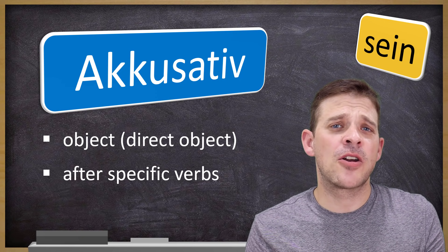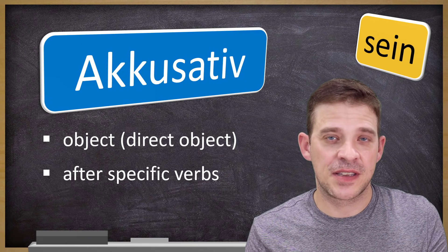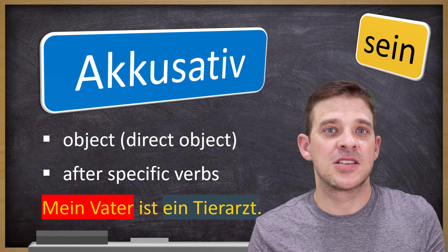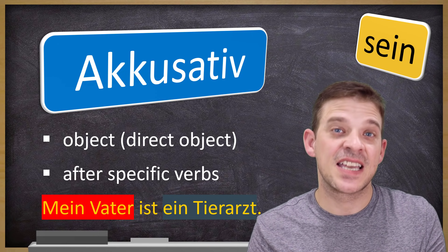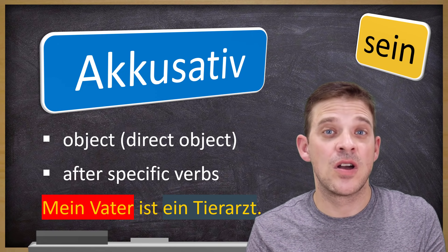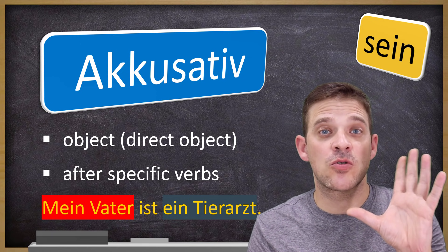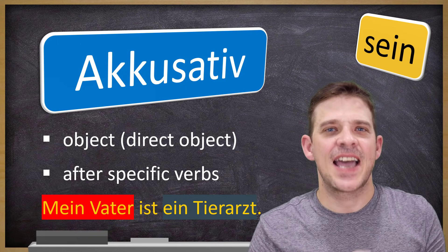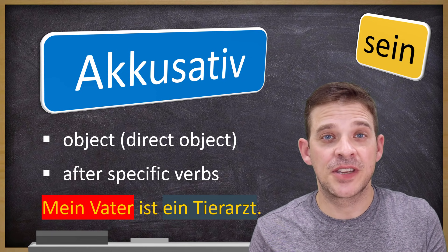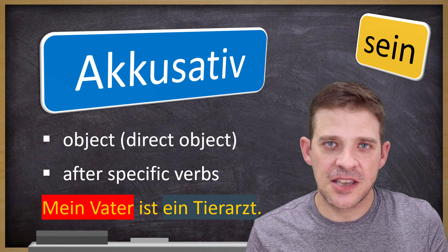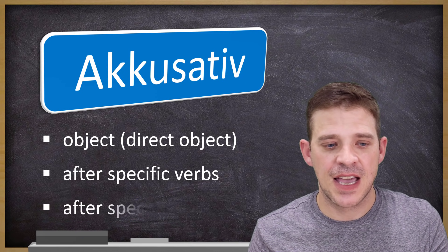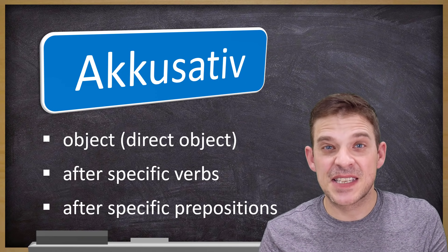'Sein' is one of those few verbs which can have two nominatives. For example: 'Mein Vater ist ein Tierarzt' — 'mein Vater' is the subject in nominative, and 'ein Tierarzt' is also nominative because 'sein' can have two nominatives. Then there are dative verbs, but everything else is accusative. So when you're unsure, always use accusative — the chances are very high it's correct, as it's the most common case.